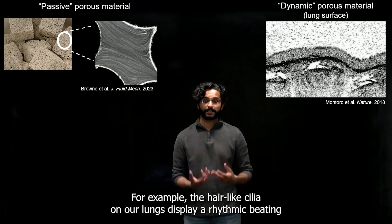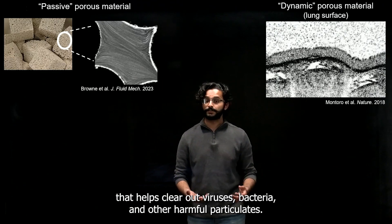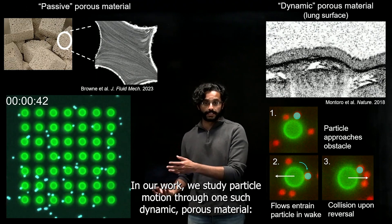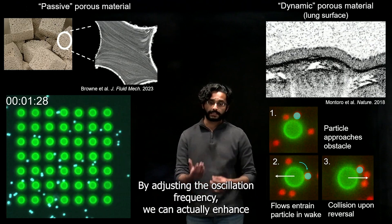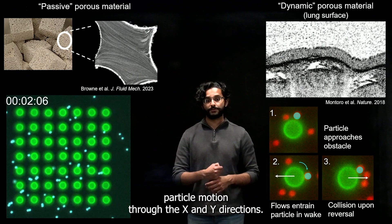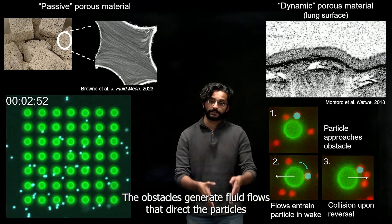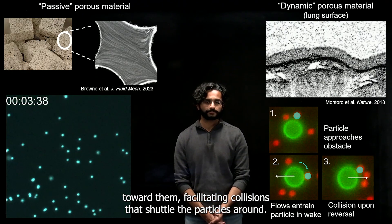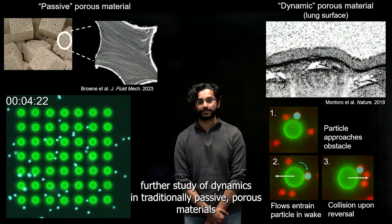For example, the hair-like cilia on our lungs display a rhythmic beating that helps clear out viruses, bacteria, and other harmful particulates. In our work, we study particle motion through one such dynamic porous material — an oscillating array of spheres that moves back and forth. By adjusting the oscillation frequency, we can actually enhance particle motion through the x and y directions. The obstacles generate fluid flows that direct the particles toward them, facilitating collisions that shuttle the particles around. We hope that our results will motivate further study of dynamics in traditionally passive porous materials.